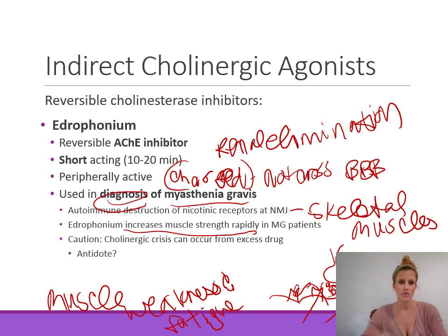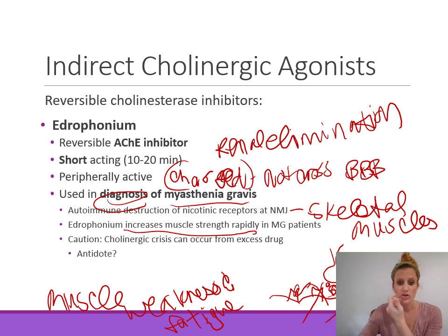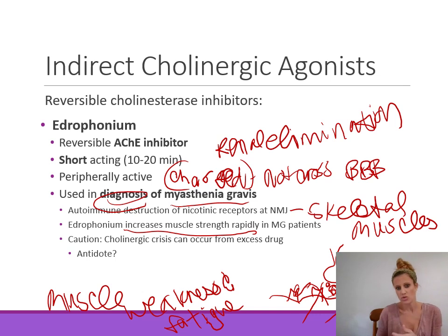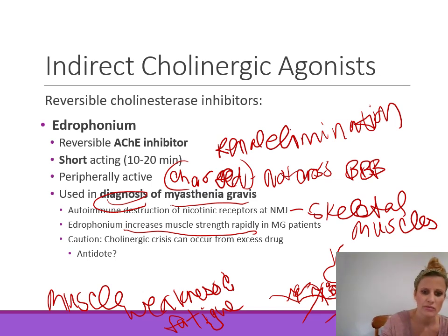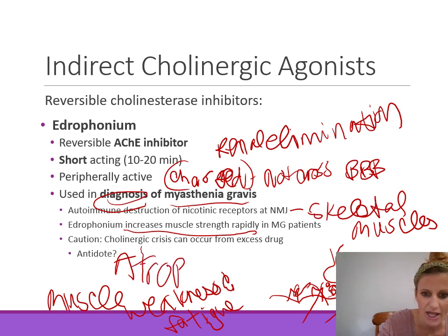Myasthenia gravis is treated with other cholinesterase inhibitors that have a longer duration of action. Cholinergic crisis can occur if excess drug builds up — the antidote, as with everything cholinergic, is atropine.